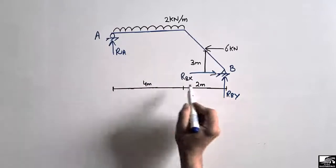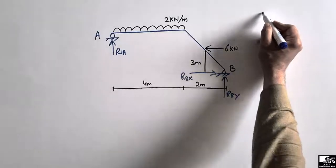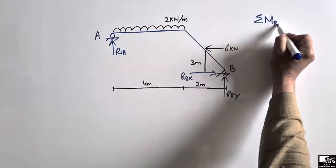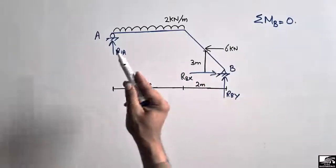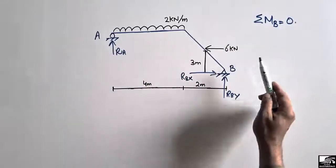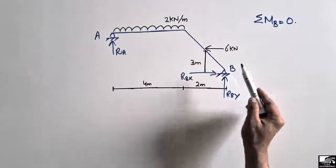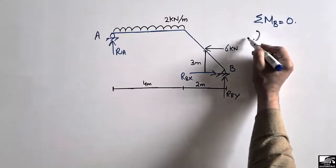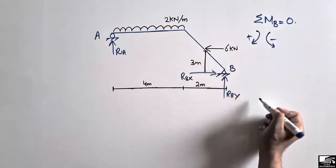To find these three support reactions, we will use the equilibrium equation: summation of moment at point B equal to zero. You can also take the summation of moment at point E equal to zero, but let's take the moment about point B. Clockwise moment is taken as positive and anti-clockwise moment is taken as negative.